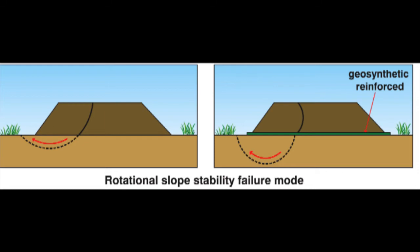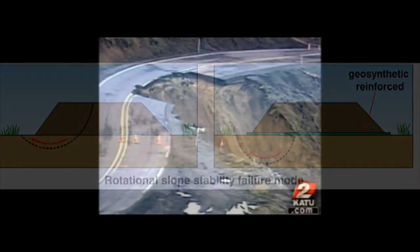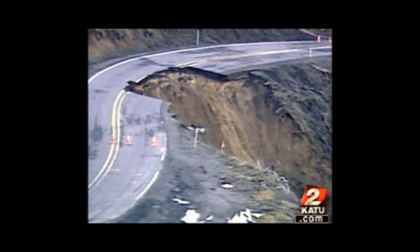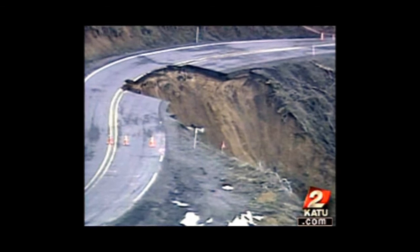The geosynthetic layer intercepts the slip failure surface and extends the potential slip circle deeper into the foundation. Here are some startling examples of rotational stability failures.